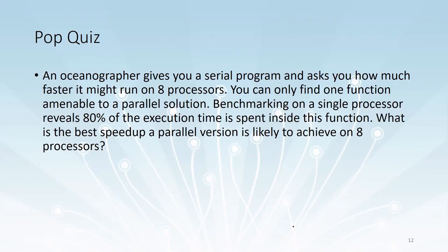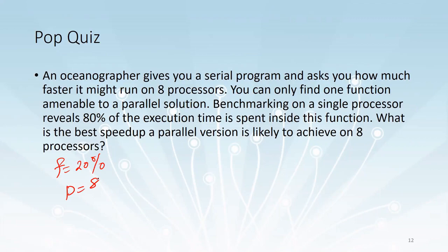Example 3: An oceanographer gives you a serial program and asks how much faster it might run on 8 processors. You find one function that can be parallelized, and benchmarking on a single processor reveals that 80% of execution time is spent inside this function. So 20% is the sequential part, meaning F equals 0.20 and p equals 8. The resulting maximum speedup is approximately 3.3.